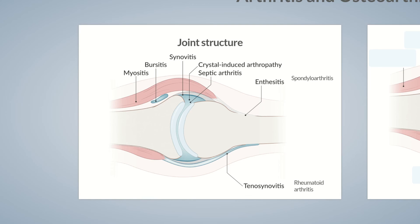Let's quickly summarize. We've learned that many different structures inside or in the close vicinity of a joint can become inflamed. These inflammatory processes can be caused by bacteria, mechanical irritation, crystal deposits, or by autoimmune diseases. However, degenerative processes need to be clearly differentiated from inflammatory processes, which are collectively termed arthritides. These degenerative changes refer to the deterioration of cartilage and bone, caused by overuse, and are referred to as osteoarthritis. The next step involves taking a detailed look at the patient's medical history in the next episode.